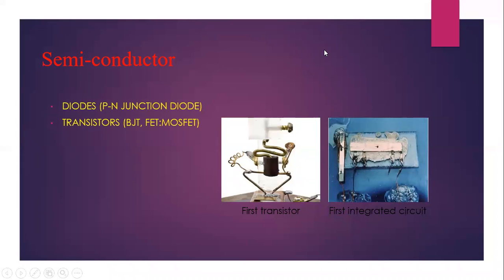Using semiconducting materials, two different types of devices are developed. The first is the diode — commonly the PN junction diode — and the next is the transistor. Two categories of transistors are BJT and FET: bipolar junction transistor and field effect transistor. Under FET comes MOSFET — metal oxide semiconductor FET. BJT is a current control device and FET is a voltage control device.